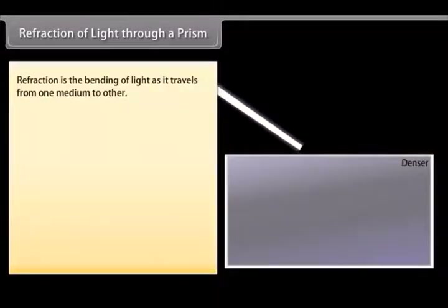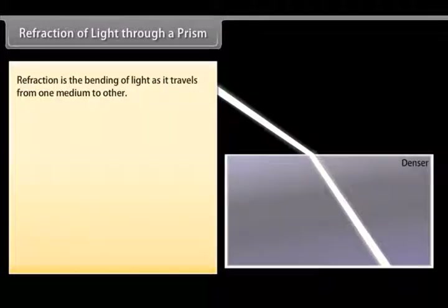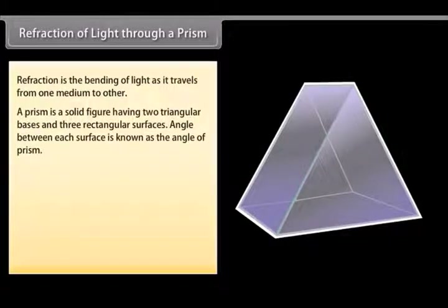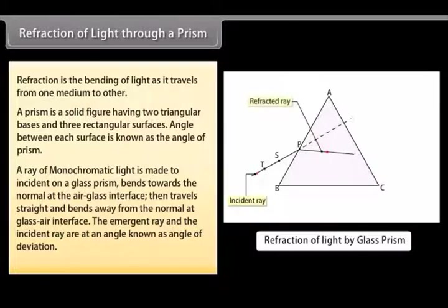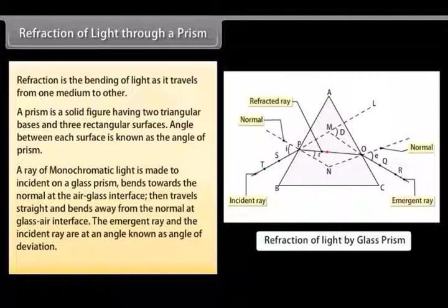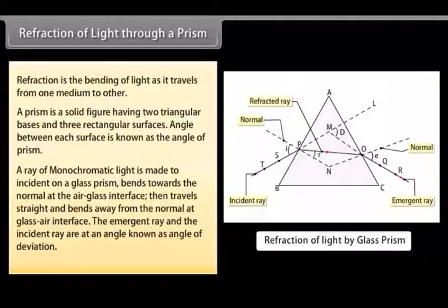Refraction of light through a prism: Refraction is the bending of light as it travels from one medium to another. A prism is a solid figure having two triangular bases and three rectangular surfaces; the angle between each surface is known as the angle of prism. A ray of monochromatic light incident on a glass prism bends towards the normal at the air-glass interface, travels straight through, and bends away from the normal at the glass-air interface. The angle between the emergent ray and the incident ray is known as the angle of deviation.